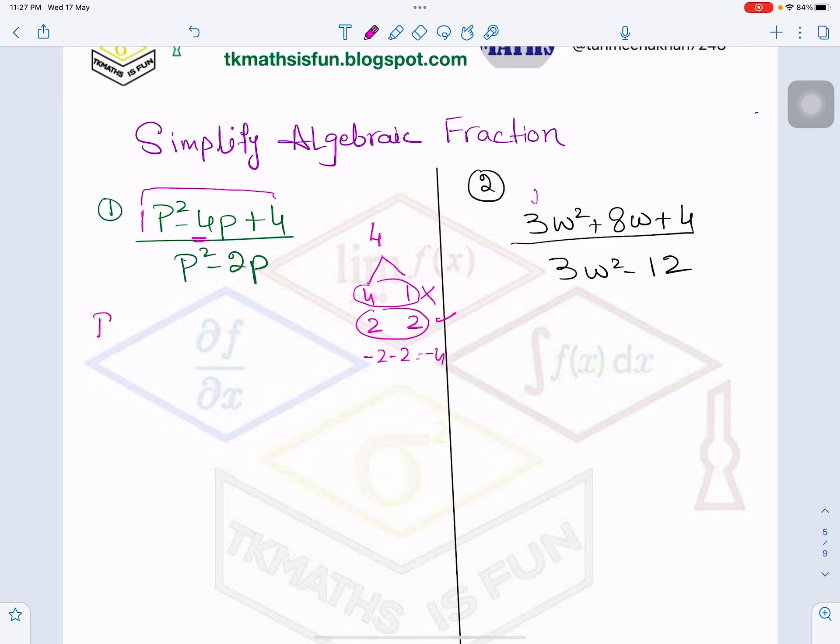So now my numerator will be - and this is also called in simple language breakup of the middle term - because the middle term is minus 4P. So I will write P² minus 2P minus 2P plus 4. And in denominator, if you see P² minus 2P, the common is P, so P(P-2).